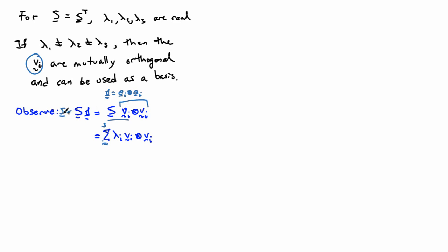And this is known as the spectral representation of s. So the lambda i's are the eigenvalues of s. And the vi's are the corresponding eigenvectors.